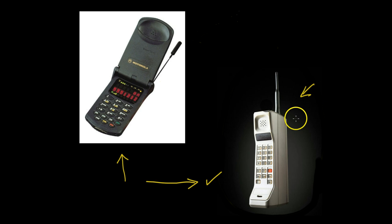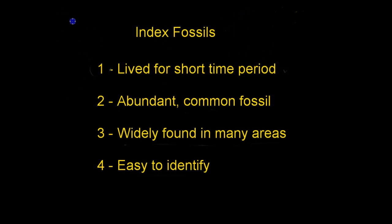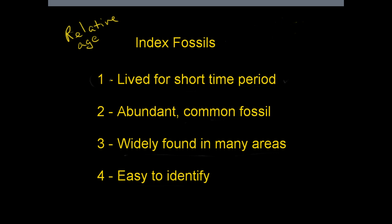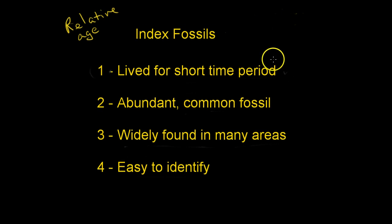I mention this because this is kind of the way index fossils work. Index fossils are a special type of fossil that helps us find the relative age of a layer and the relative age of the fossils found within that layer. The most important criteria for a good index fossil is that it lived for a very short period of time, and we know when that period was. So we know when we find that fossil that that layer represents organisms that lived during that specific time.